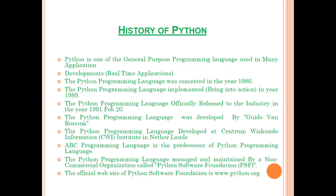The official website of the Python Software Foundation is www.python.org, from where we can easily and freely download the Python software. So to summarize: conceived in 1980, implemented in 1989, officially released on February 20, 1991. Guido Van Rossum is the father of Python. It was developed at CWI Institute in the Netherlands. ABC is its predecessor, and now it is managed by PSF. We need not pay anything for this.